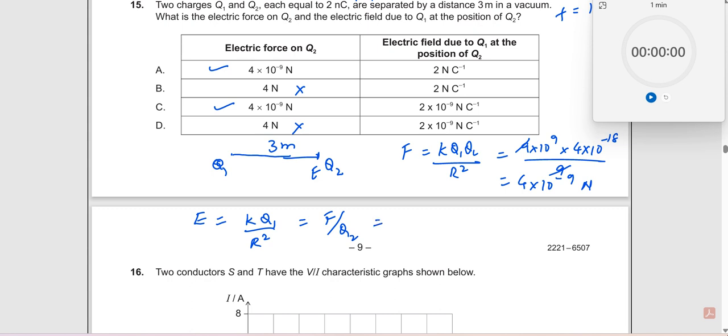So which should now be 4 × 10^-9. F is already known, and q2, what is q2? 2 nanocoulomb, right? 2 × 10^-9, which goes away over here. You get the answer as 2 over here. What is this? 2 newton per coulomb. So therefore 2 newton per coulomb, so this is the right answer over here.